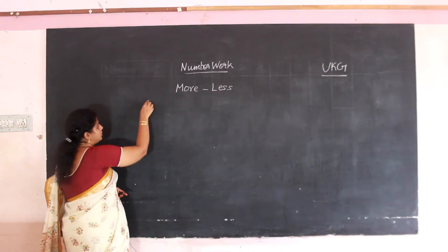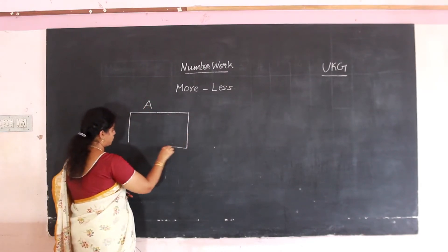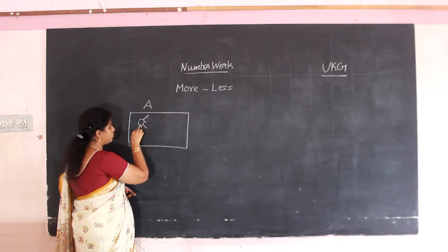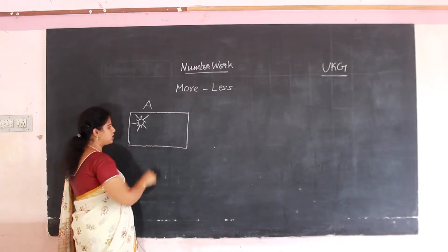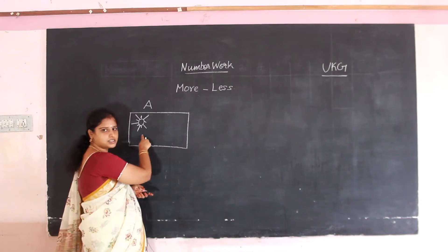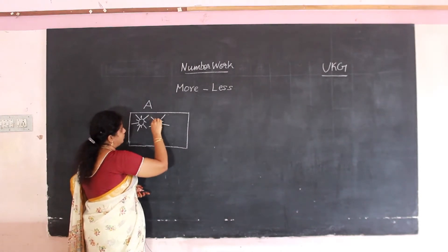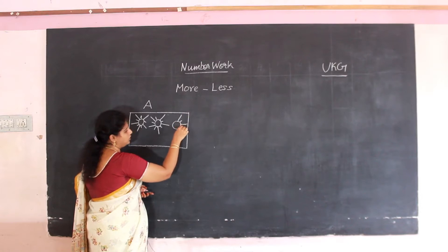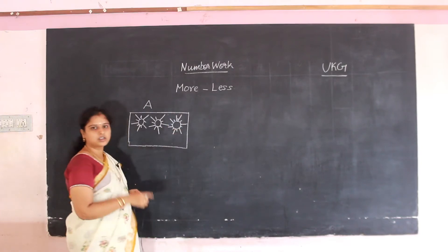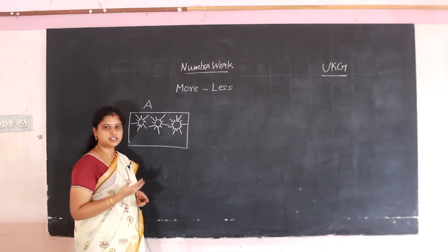So, first example. This is one box — box A. In this box, what is inside? Sun! The sun is in yellow and orange color. Now, how many suns are in this box? Count: one, two, and three. Three suns are in box A.